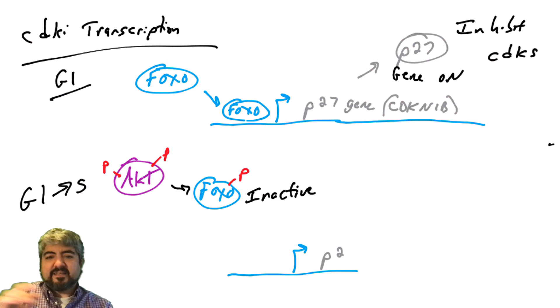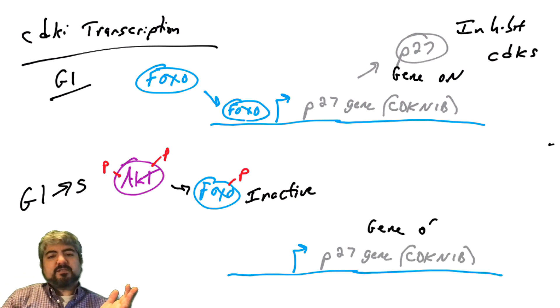Now, if FOXO is inactivated, then what about the P27 gene? Well, FOXO can no longer turn on the P27 gene. So P27 levels drop because FOXO is inactive, because AKT is active.